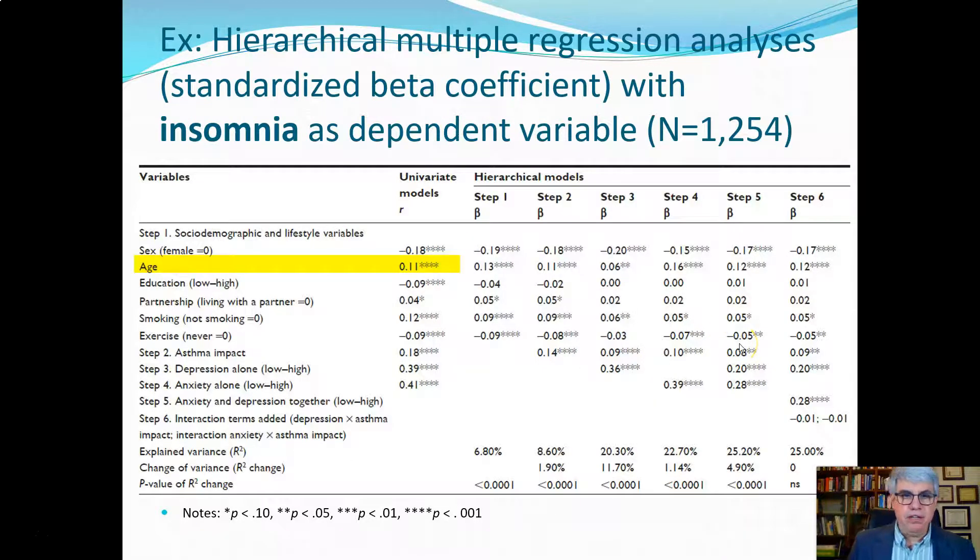Now let's look at an example. Let's go back to the example that we looked at previously where we're predicting insomnia from lots of different variables. We had sex, age, education, whether somebody had a partner, smoking, exercise, whether they had asthma, depression, and anxiety.